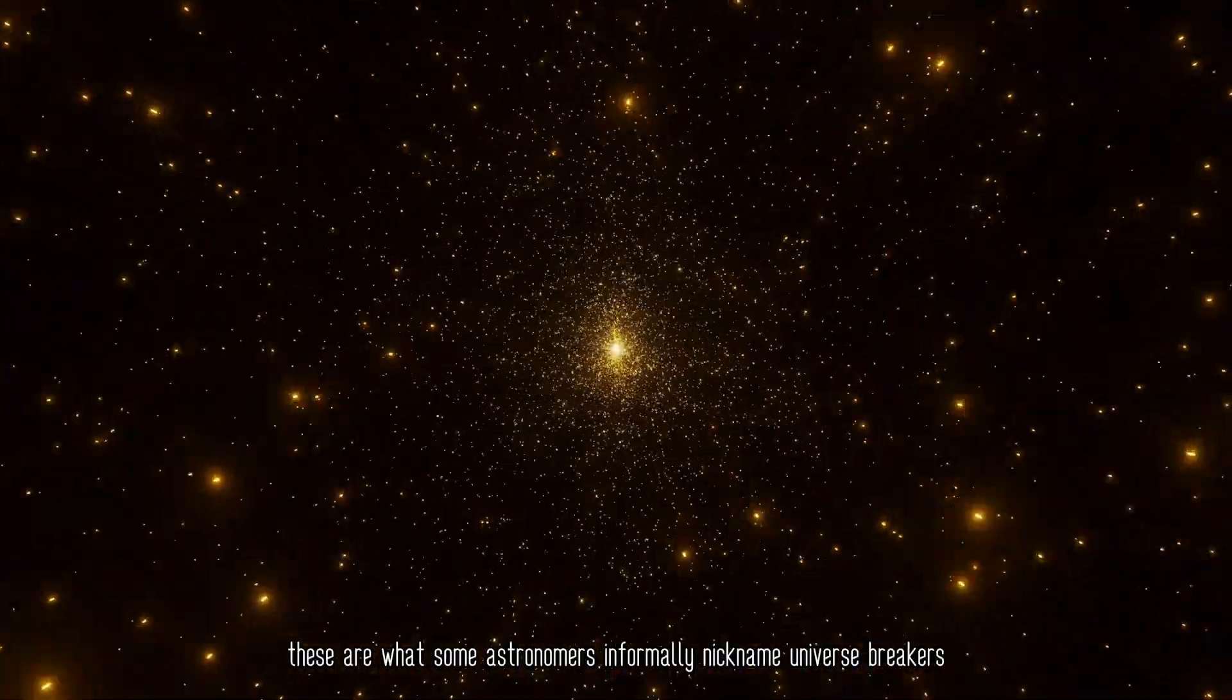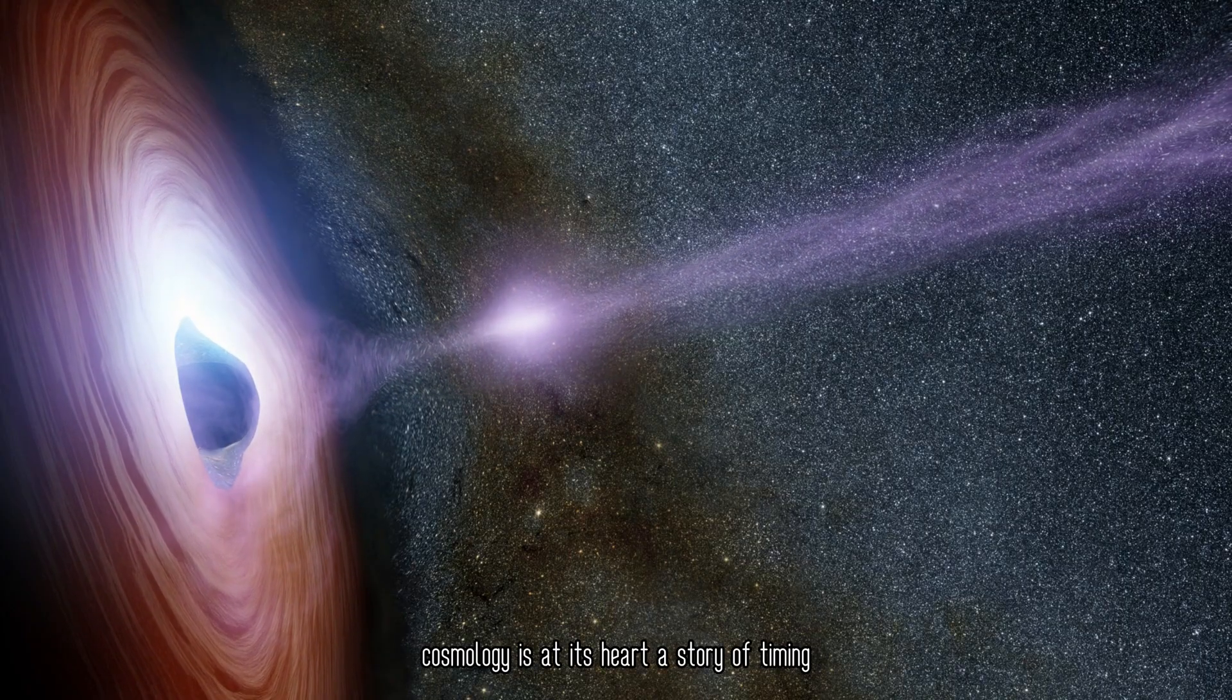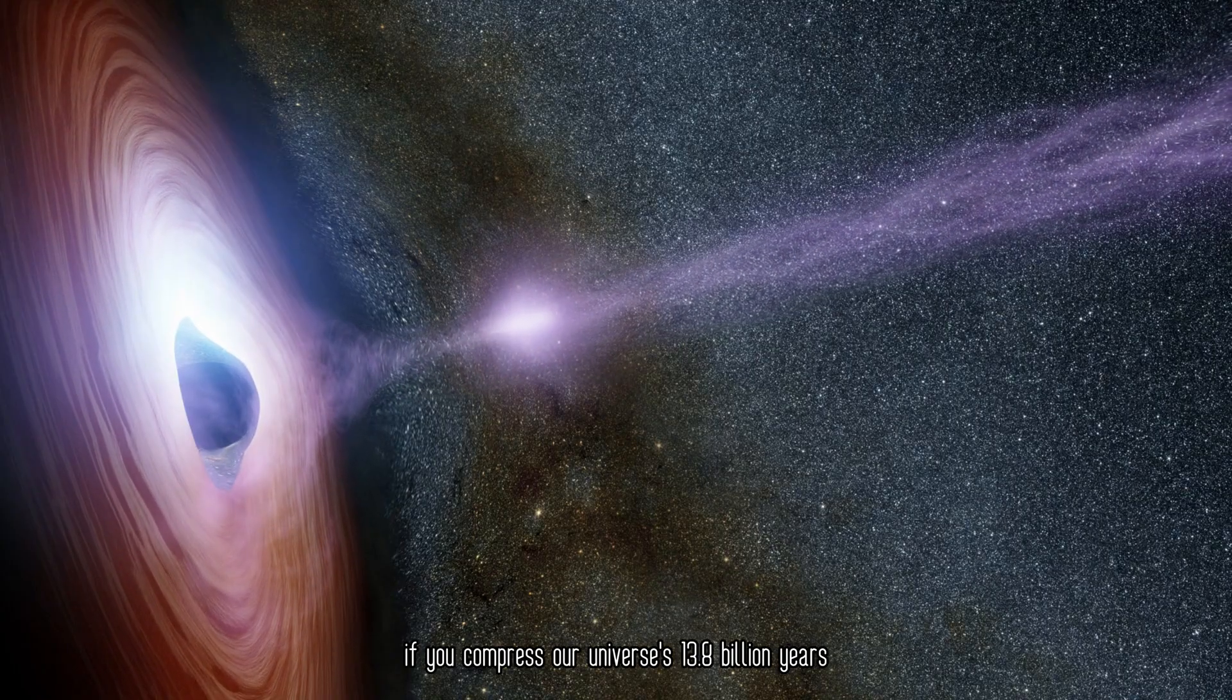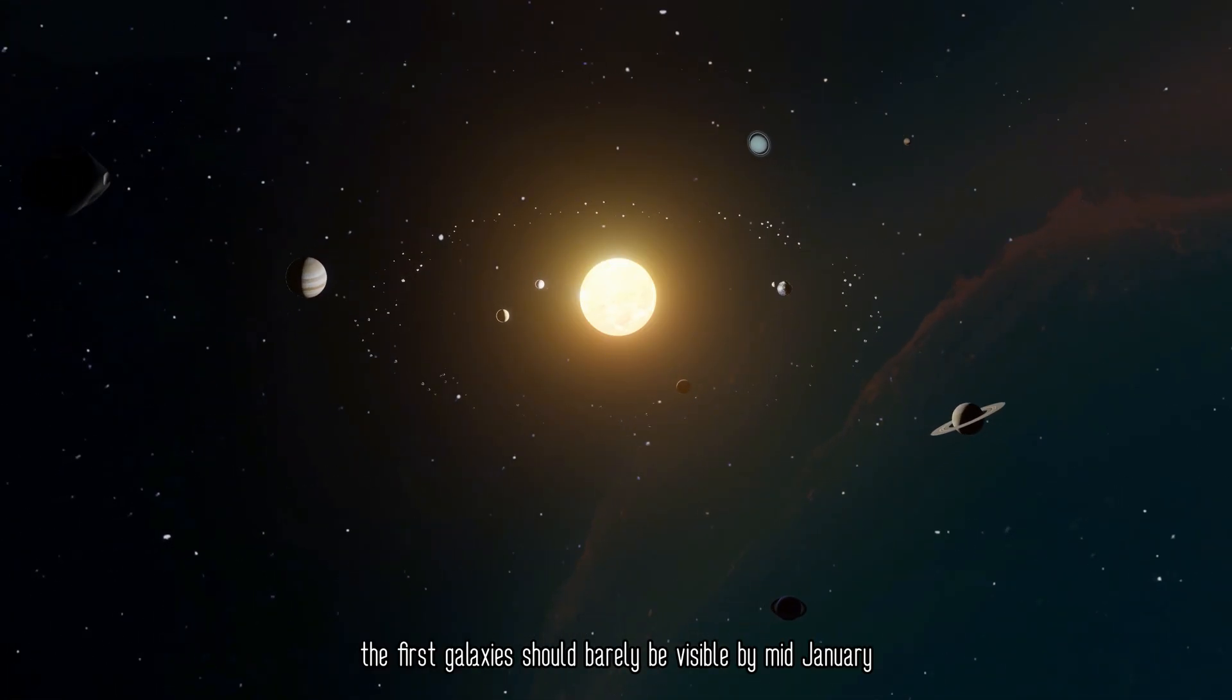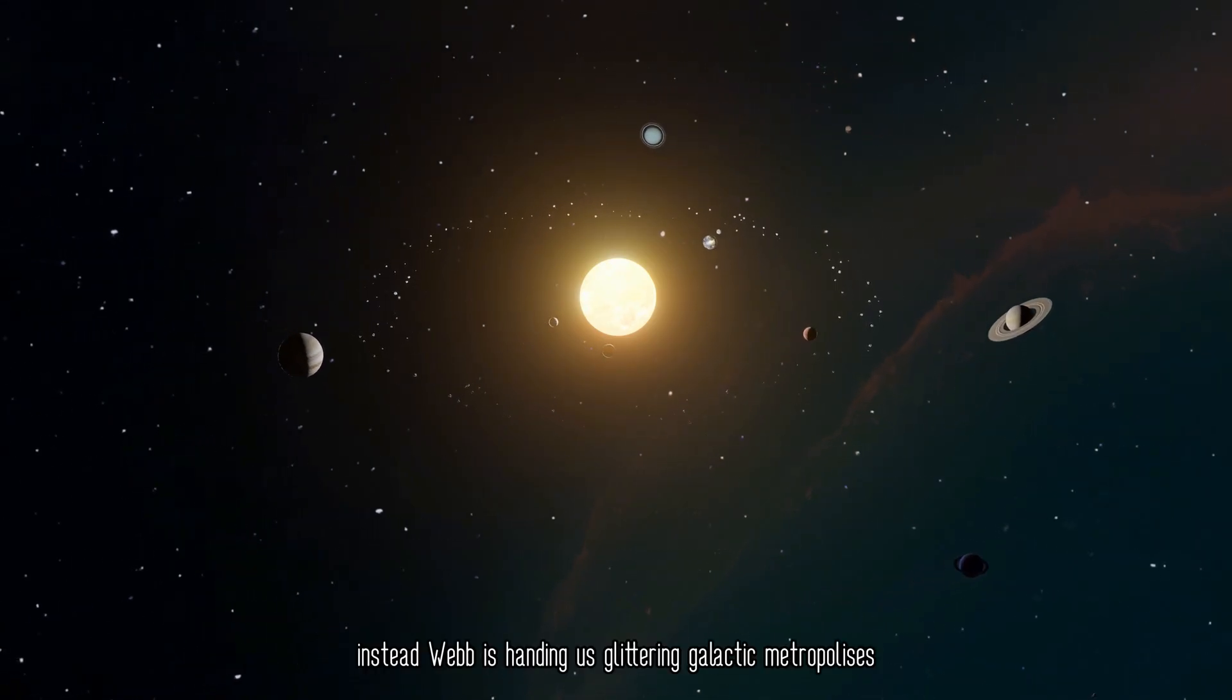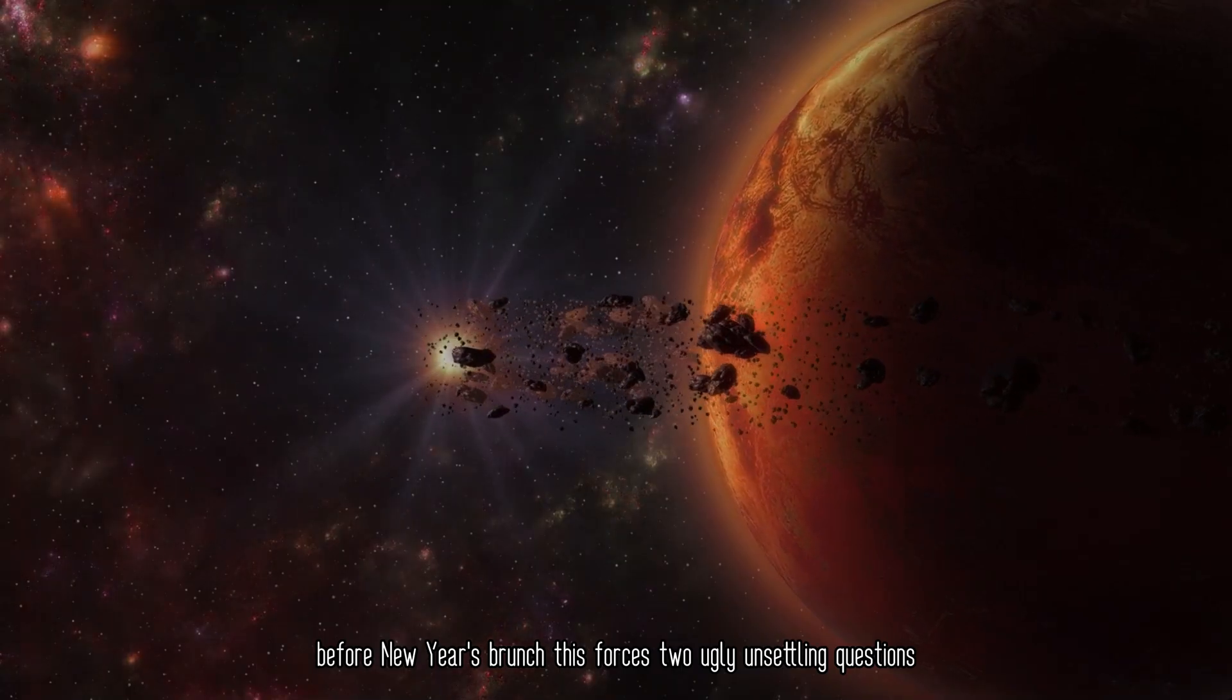These are what some astronomers informally nicknamed Universe Breakers. Cosmology is, at its heart, a story of timing. If you compress our universe's 13.8 billion years into a single calendar year, the first galaxies should barely be visible by mid-January. Instead, Webb is handing us glittering galactic metropolises before New Year's Brunch.